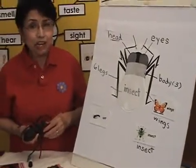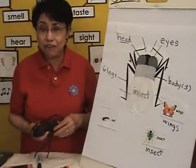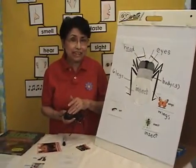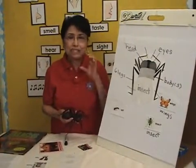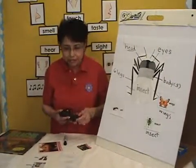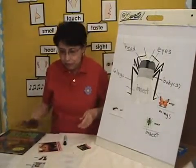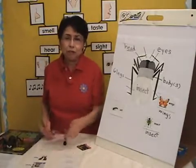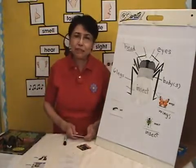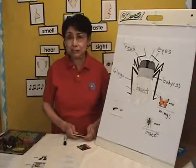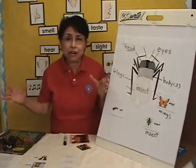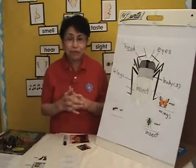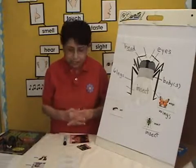Today we are going to identify the different parts of the insect — specific body parts. And the way we're going to do that is through our engagement. Remember that every lesson must have an engagement activity where the children are actively engaged, actively investigating, interacting.